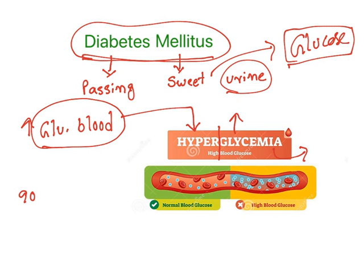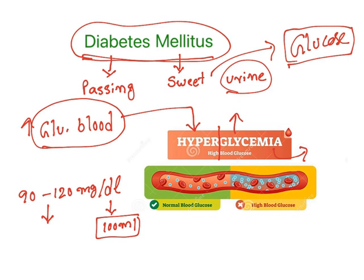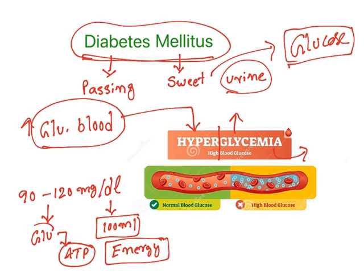Normally in the human body there needs to be at least 90 to 120 milligrams of glucose per deciliter of blood. Deciliter is nothing but 100 ml of blood. That means when you draw 100 ml of blood, all the time it has to contain 90 to 120 mg of glucose, because glucose is the one which is providing energy to us. That energy is in the form of ATP. In normal blood glucose, a small amount of glucose is there. In high blood glucose, a lot of glucose molecules are there, and that condition is known as hyperglycemia.